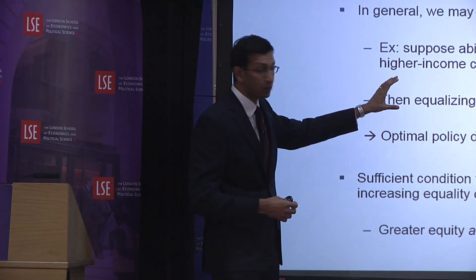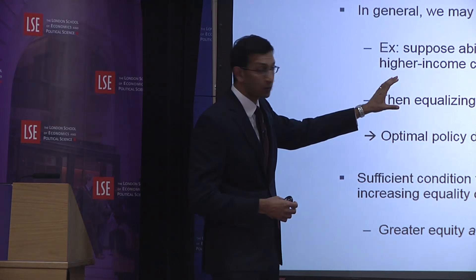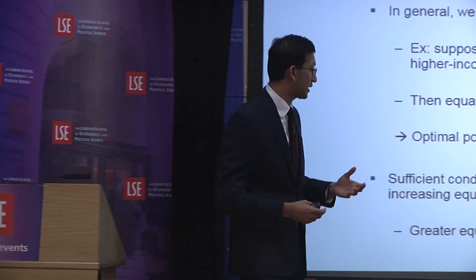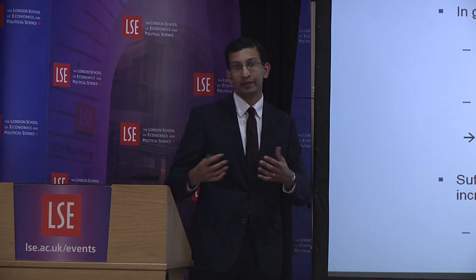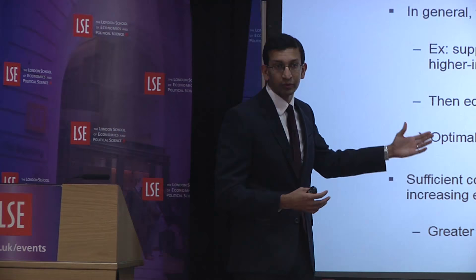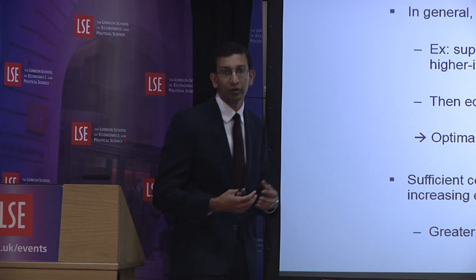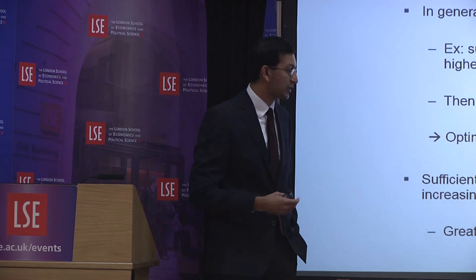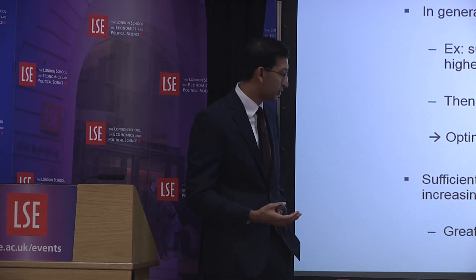Inequality of opportunity would maximize output in that scenario. Where there's a tension between equality of opportunity from a justice perspective and the goal of maximizing aggregate output from an efficiency perspective, the optimal policy depends upon the social welfare function — the relative weight we place on justice and aggregate efficiency. A sufficient condition for the desirability of greater equality of opportunity is a situation where increasing it also happens to increase efficiency and economic growth.